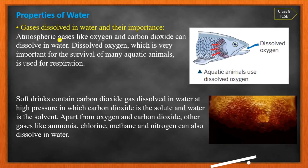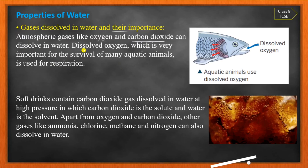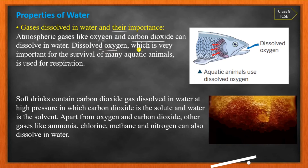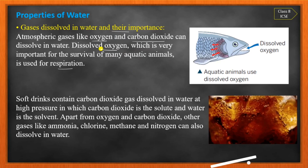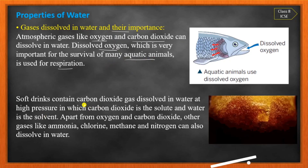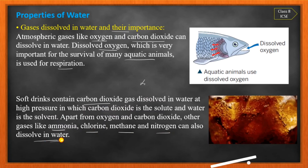Next — gases dissolved in water and their importance. Gases like oxygen and carbon dioxide can dissolve in water. Dissolved oxygen is very important for the survival of aquatic animals; fish use dissolved oxygen for respiration. In soft drinks, carbon dioxide is dissolved at high pressure, which is why bubbles come out when opened. Other gases like ammonia, chlorine, methane, and nitrogen can also dissolve in water.